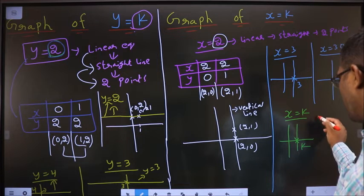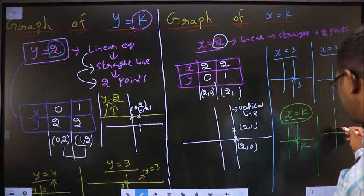The conclusion here is for every x equal to k, we get a vertical line passing through k. Or in another way, you can remember x equal to k, so I get a line perpendicular to x-axis.